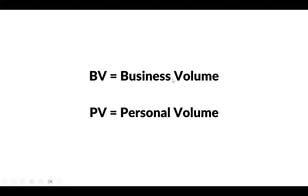Let's define this first. BV equals business volume; PV equals personal volume. All of the patches have points or business volume attached to them. BV and PV are exactly the same thing, except personal volume is what you have personally ordered yourself. In practice, we usually just refer to everything as BV, but know that there is that distinction.